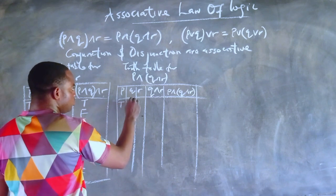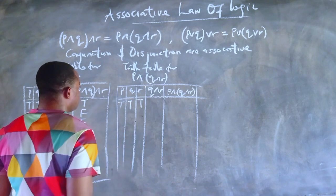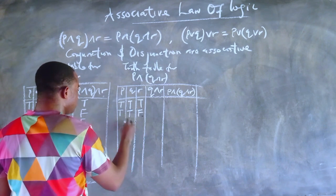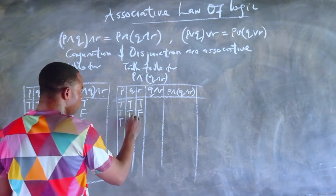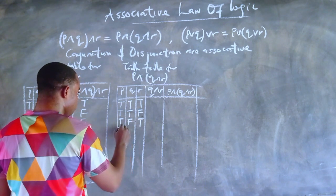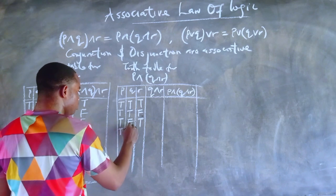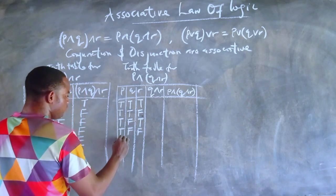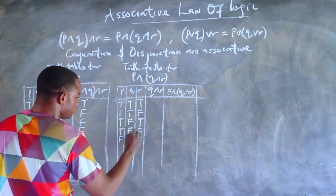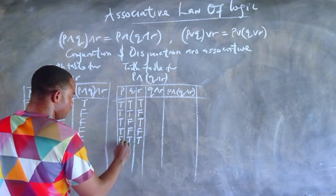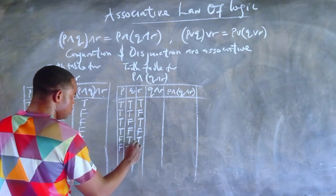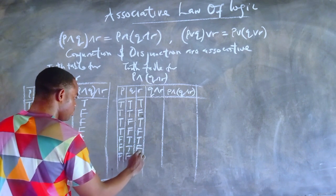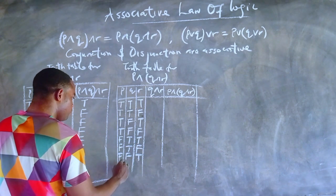Since we have three simple statements involved, there will be eight conditions: True, True, True; True, True, False; True, False, True; True, False, False; False, False, True; False, False, False; and the remaining false combinations.